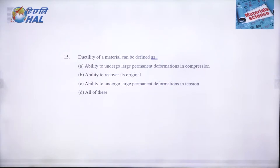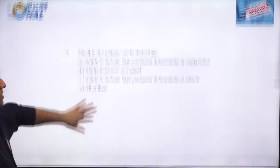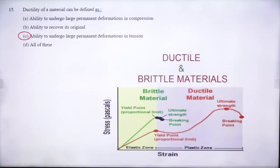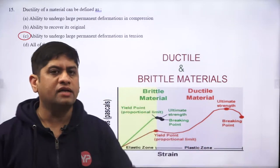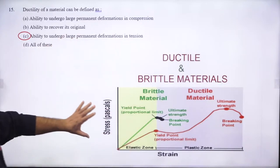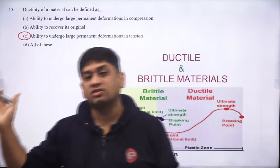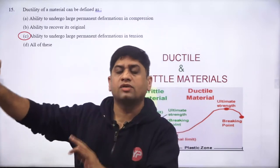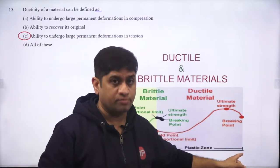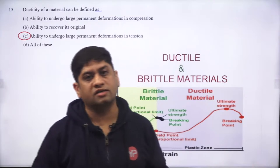Question fifteen: ductility of a material can be defined as the ability to undergo large deformation in tension. Malleability involves compression; ductility involves tension. The difference between brittle and ductile material: brittle materials do not have a plastic deformation zone, while ductile materials have a large plastic deformation zone. On the stress-strain diagram, if the strain at fracture is less than 5%, the material is brittle; if more than 5%, it is ductile.